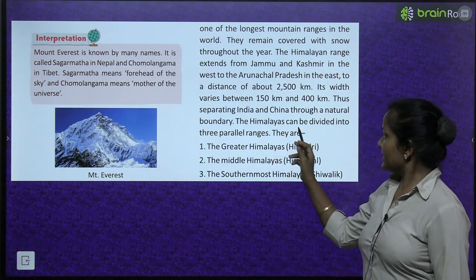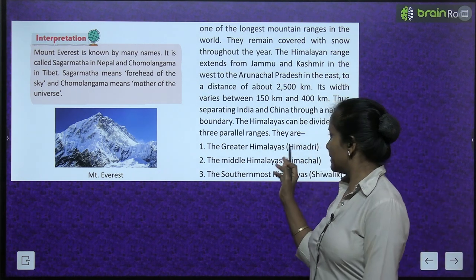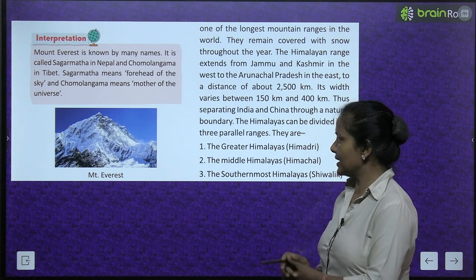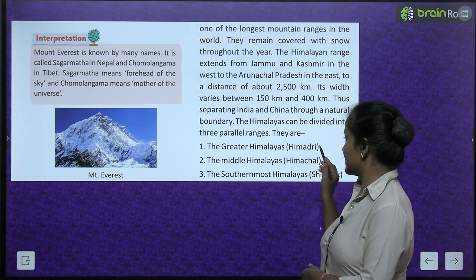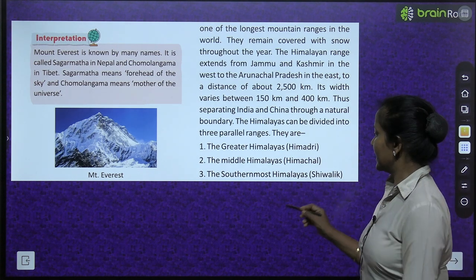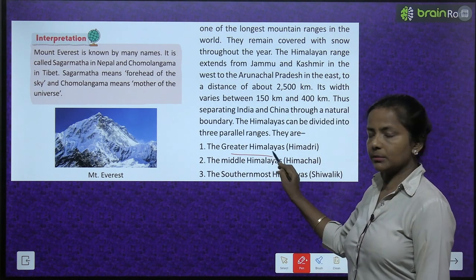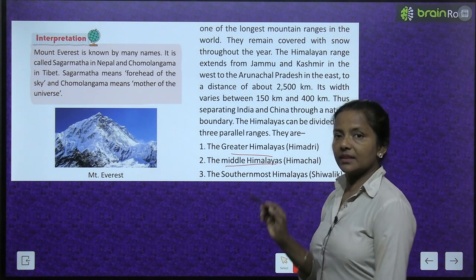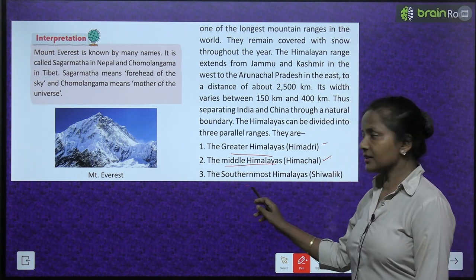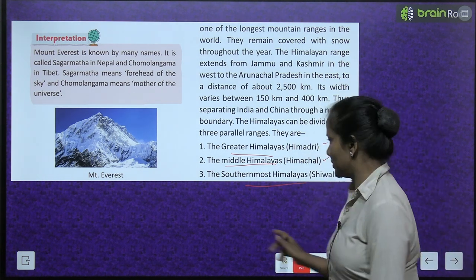The Himalayas can be divided into three parallel ranges: the Greater Himalayas, known as Himadri; the Middle Himalayas, known as Himachal; and the southernmost Himalayas, known as Shivalik.